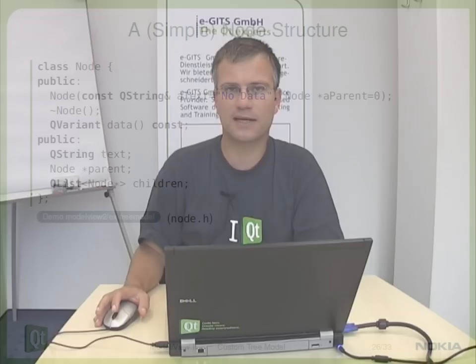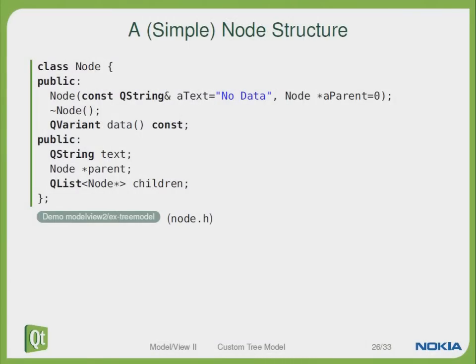Let's first give a little introduction on what we want to do in this example. We have a helper class which is just called node. This node is just a representative of maybe your hardware device driver or anything. You would like to have just a hierarchical structure of nodes. In this node we just have a data function, we have a text string, and we have the parent-child relations.